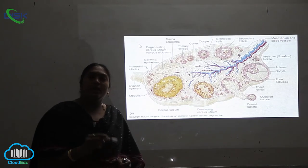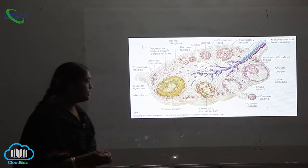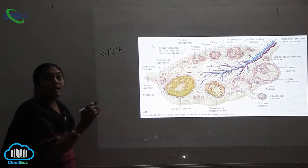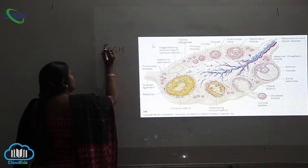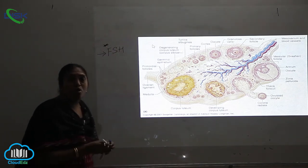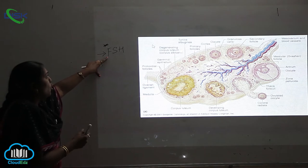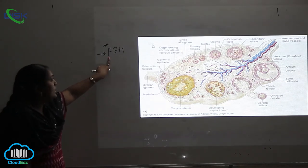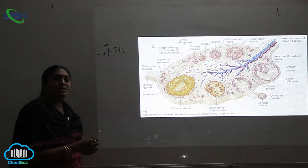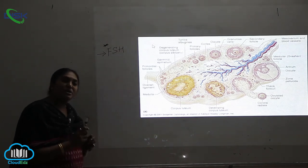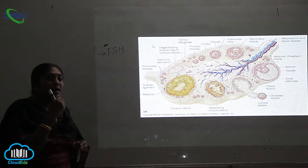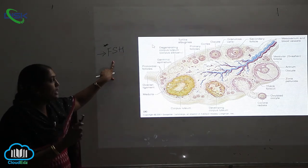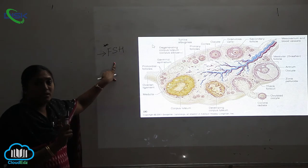In females, a particular hormone called follicle stimulating hormone (FSH) plays a very important role during the process of ovulation. This hormone comes from the anterior part of the pituitary gland. The anterior pituitary releases FSH, and only then does the production of ova happen in females.